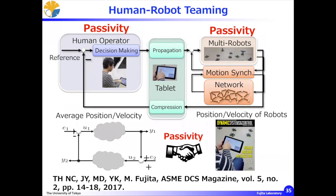We can readily extend this standard teleoperation technique to human swarm teleoperation. On one side, we have a multi-robot system controlled by the passivity-based approach. As we know, robot swarms can be achieved by passivity-based pose synchronization. On the other side, if we assume a passive human operator from vision to motion, then the overall human swarm teleoperation should work well even with possible time delay in the Internet. This result is reported in the ASME Dynamic Systems and Control Magazine in 2017.